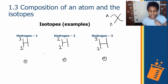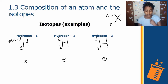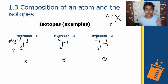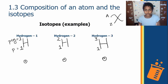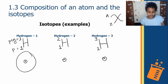For hydrogen-1, the mass number is 1, which equals protons plus neutrons. We know there is 1 proton, so the number of neutrons must be 0. There are no neutrons in hydrogen-1, although there is an electron orbiting around the nucleus.